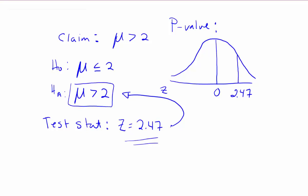In order to determine the p-value, we need to think about what area we need to find, and that area is going to be based off of the alternative hypothesis.